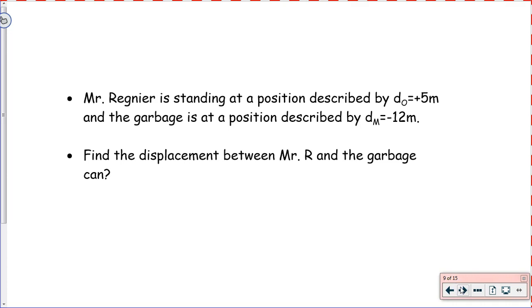Mr. Rainier is standing at a position described by D0, position 0, of positive 5 meters. And the garbage is at a position described by negative 12 meters. So essentially, if we were drawing this out to figure out his displacement, we have our reference point, which is here. Now, the reference point actually isn't that important. What we have, though, is Mr. Rainier standing at positive 5 meters. Where is the garbage? Now, because it's negative, that means we need to go in the other direction. This is in the positive direction for Rainier. This is the negative direction for the garbage can. So how do we figure out the displacement between them?